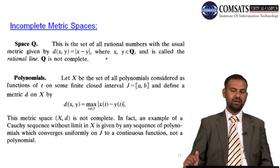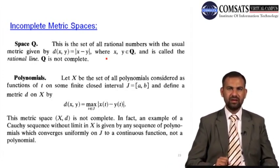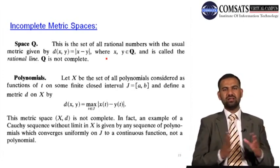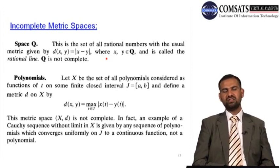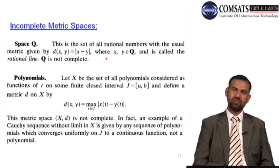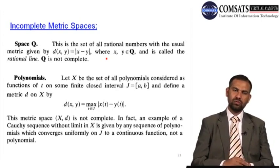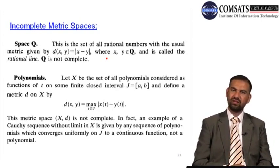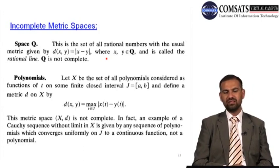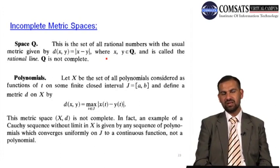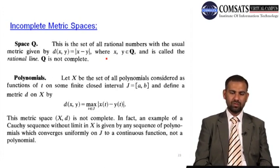Now we discuss incomplete metric spaces. A simple example of an incomplete space is the open interval (0,1). The sequence 1/n is a Cauchy sequence that converges to zero, but zero does not exist in the open set (0,1). So this space is not complete. To show a space is incomplete, we only need to construct a single counter-example — one Cauchy sequence that does not converge within the space.